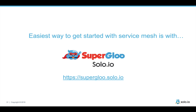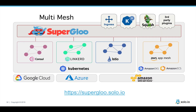The easiest way to get started with Service Mesh is with an open source project called Superglue from solo.io. In this video we're going to take a look at getting started with AWS App Mesh using Superglue. Superglue is an API abstraction on top of any implementation of Service Mesh.